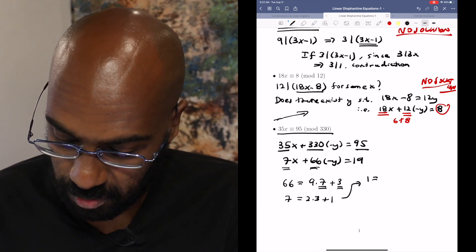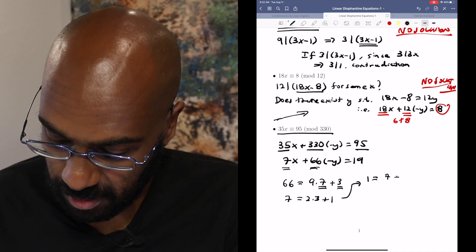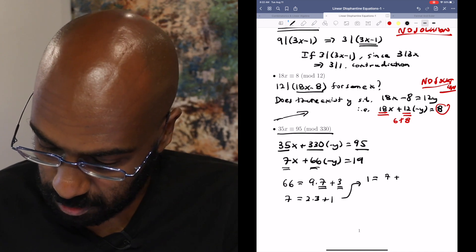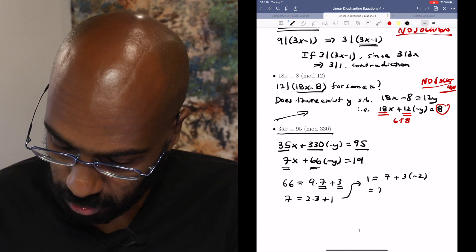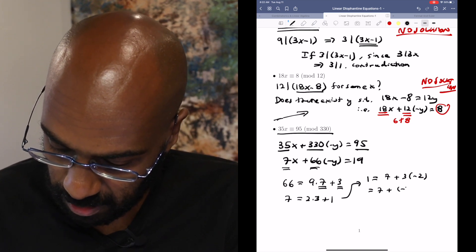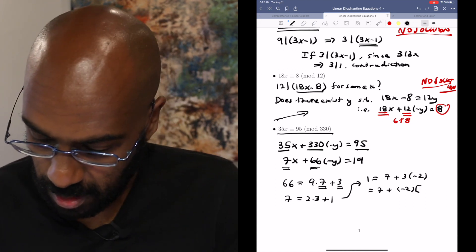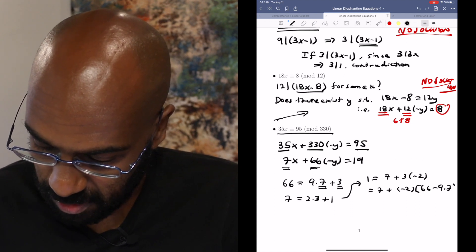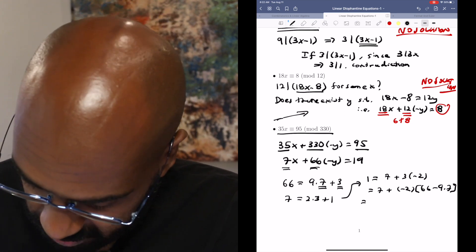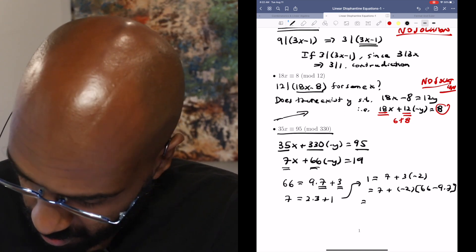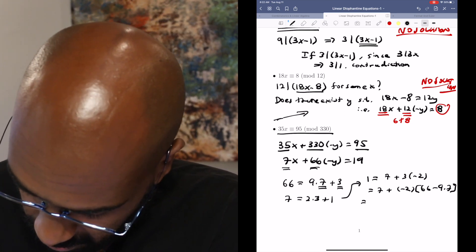And now doing this in reverse, 1 is 7 plus 3 times negative 2, which we can write as 7 plus negative 2 times 66 minus 9 times 7. And now we have 1 as an integer combination of 66 and 7. We get 19 copies of 7.